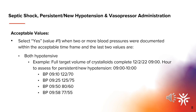For the question — is persistent or new hypotension present? — select yes, value one, when two or more blood pressures are documented within the acceptable time frame and the last two values are both hypotensive. Abstract the latest time of the last consecutive hypotensive values documented; in this case, it would be 9:58. Of note, the question for this data element does not require that a date or time be abstracted. However, it is necessary to know the exact onset time to determine the presence of septic shock in the setting of severe sepsis with initial hypotension.